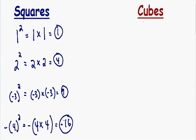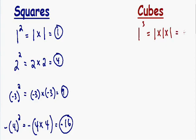So I think you get the idea on squaring a number. Now let's go over the second term you're going to see a lot when dealing with exponents, which is cube. Whenever you cube a number, that means there is a 3 in the exponent. So if we had the number 1 cubed — or 1 raised to the third power — that means you multiply the number by itself 3 times. 1 times 1 times 1 is equal to 1, so 1 cubed is equal to 1.